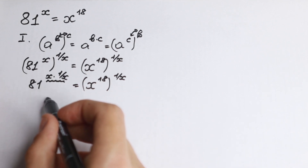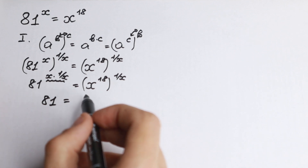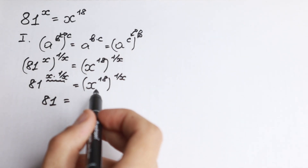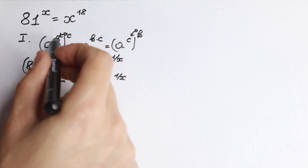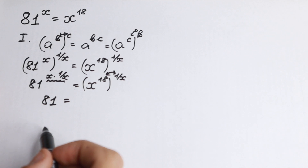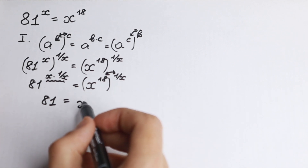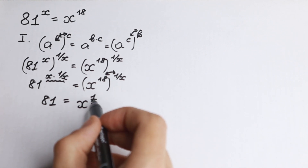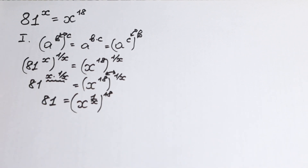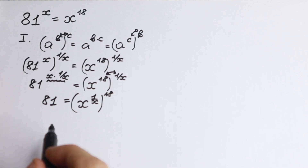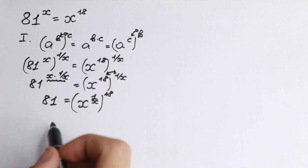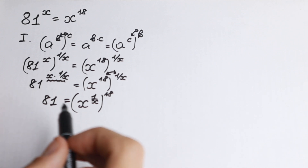As a result, on the left hand side we have 81. On the right hand side, we can swap these exponents using the interchange rule. So as a result we will have x to the power 1 over x, in parentheses, raised to the power 18 — 18 goes outside. Now the second really important step.